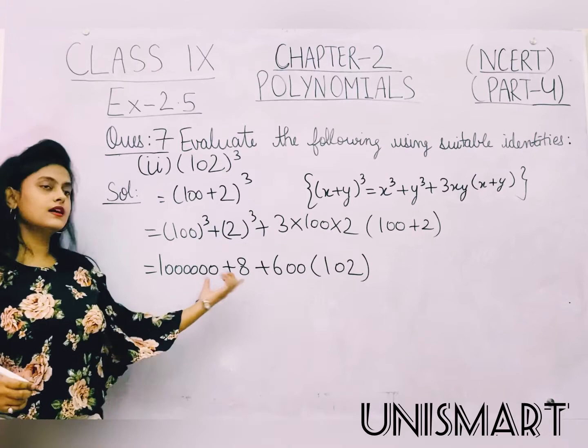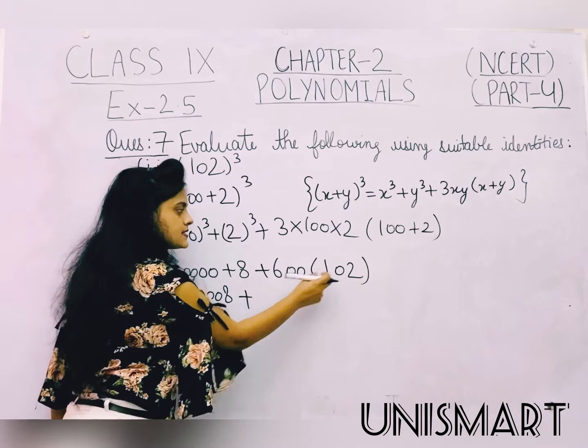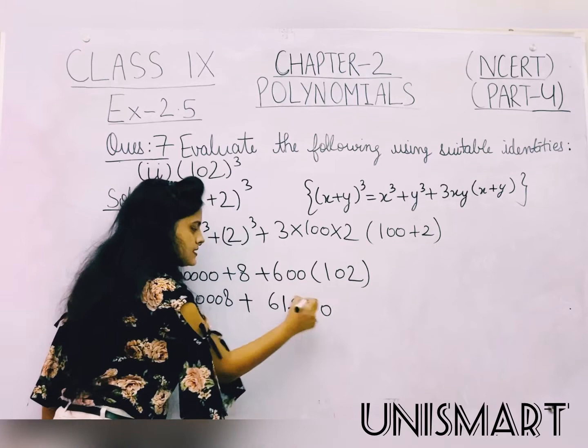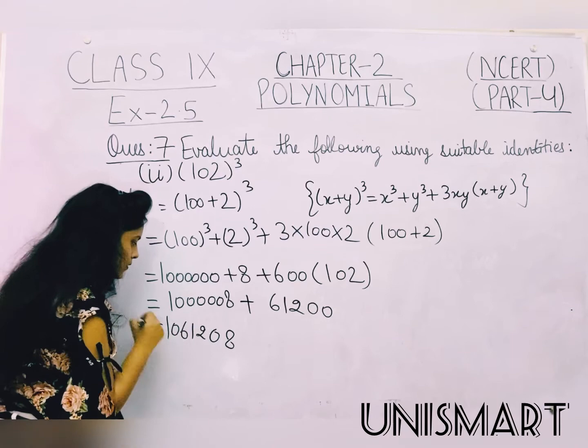Isko aage hum plus karte hain. So yaahan par humara aayega 1,000,008. Ise kar lete hain multiply: 6 into 2 is 12 — write 2, carry 1. 6 ones are 6, plus 1 is 7 — giving 61,200 with double zeros. Ab hum ise kar lete hain add. So yeh aayega humara: 1,061,208. So yeh aayega humara iska solution.